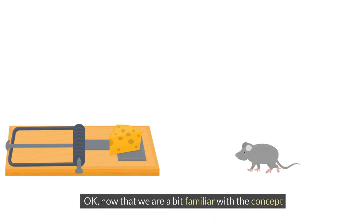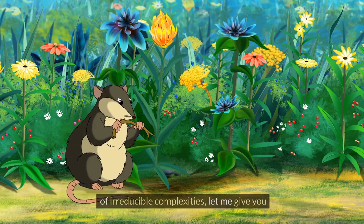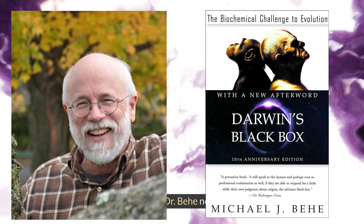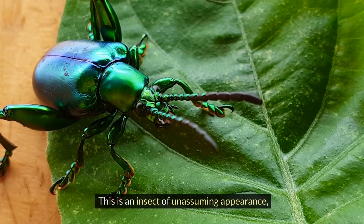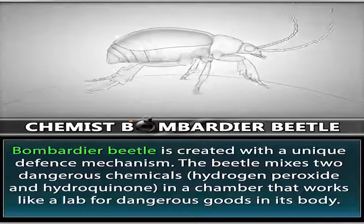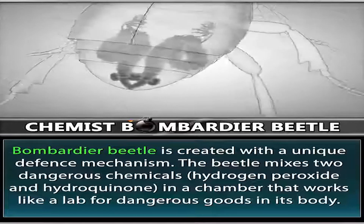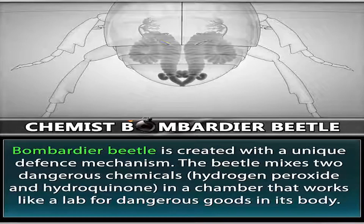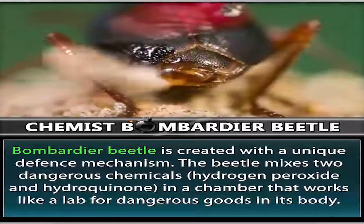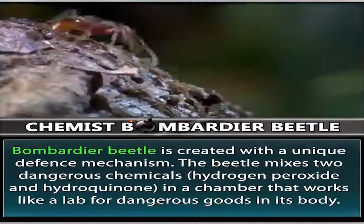Now that we are familiar with the concept of irreducible complexities, let me give you an example that Dr. Behe notes in his book. Let's talk about the Bombardier Beetle. This is an insect of unassuming appearance, measuring about one-half inch in length. When it is threatened by another bug, the beetle has a special method of defending itself: squirting a boiling hot substance at the enemy out of an aperture in its hind section.